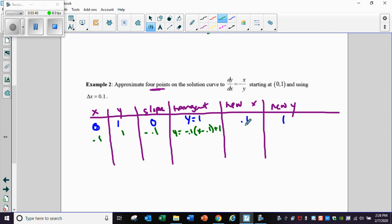My new x value will be my old x value plus another 0.1, so 0.2. Plug 0.2 in here, I get 0.1 times negative 0.1, which is negative 0.01, which will get me to 0.99 here.